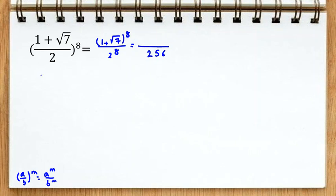Now we should focus on numerator 1 plus root 7. And we should use this identity that a plus b whole square is a squared plus b squared plus 2ab.